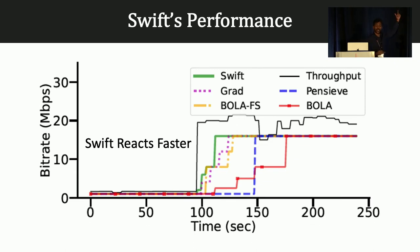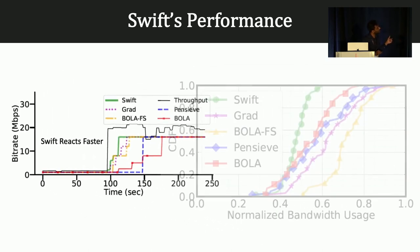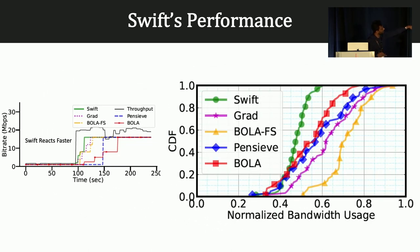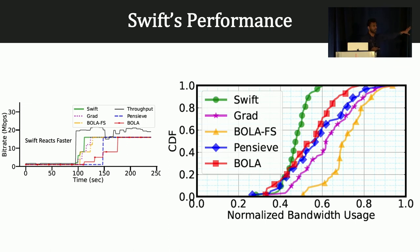Returning to the plot shown earlier — on the y-axis throughput or bit rate, on the x-axis time scale — Swift reacts faster than all other alternatives, which is why it is named Swift. Importantly, it not only reacts faster but also has better bandwidth utilization. Algorithms like BOLAFS and GRAD are close to Swift in reaction speed, but have significant compression overhead: BOLAFS discards video chunks, and GRAD uses a traditional layered compression technique with large compression overhead. The advantage with Swift is that it reacts fast while saving bandwidth.